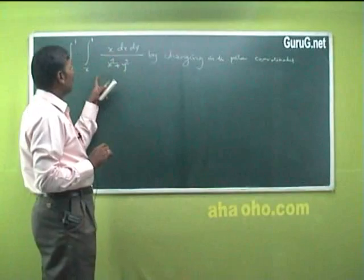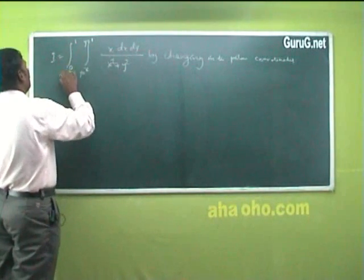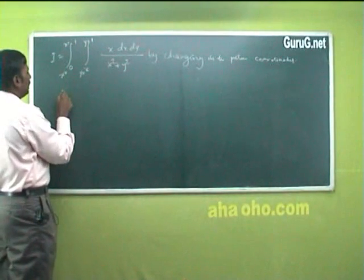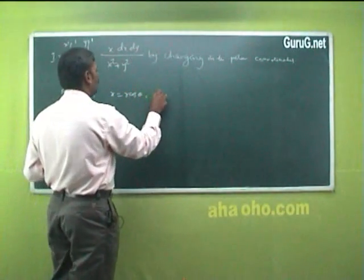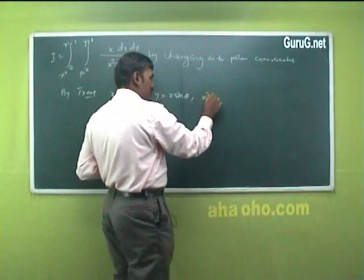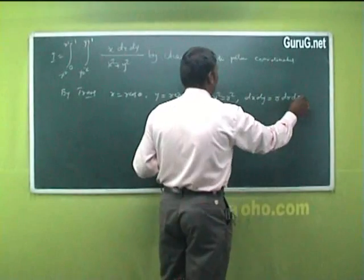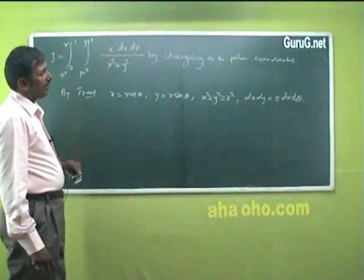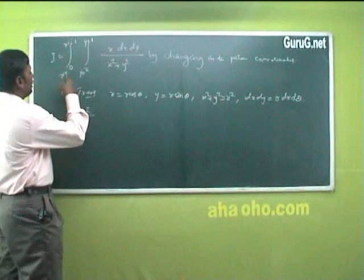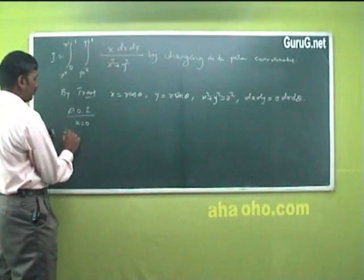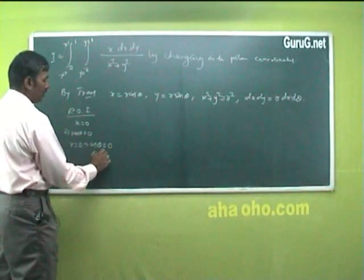In the given integral in Cartesian form, let I equal this integral. This is a variable y limit and this is the x limit. By transformation: x equals r cos theta, y equals r sin theta, x² plus y² equals r², and dx dy equals r dr dθ. The region of integration is bounded by x equals 0, which implies r cos theta equals 0, so r equals 0 or theta equals π/2.